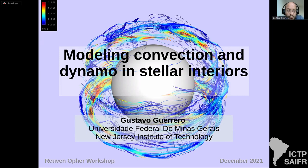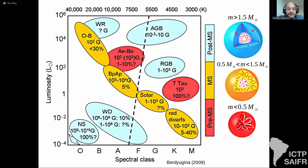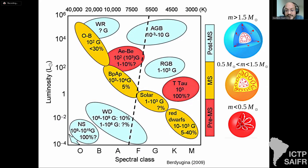I work at UFMG in Belo Horizonte and now I am at the New Jersey Institute of Technology spending one year here. This is the magnetic HR diagram — here we have the main sequence. What is interesting is that most stars, whatever their evolutionary stage, show a significant magnetic field. The Sun is in this part of the main sequence and we observe magnetic fields of the order of kilogauss in sunspots.